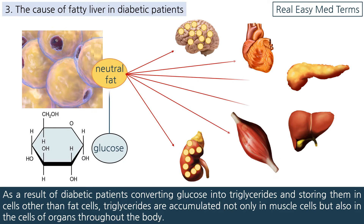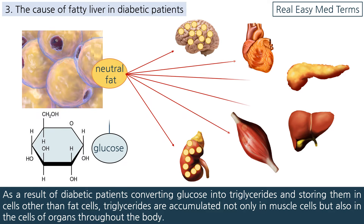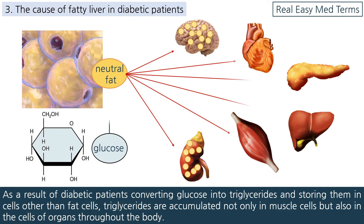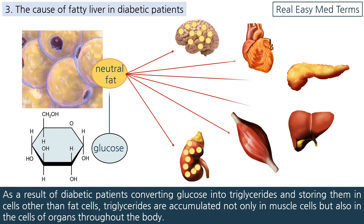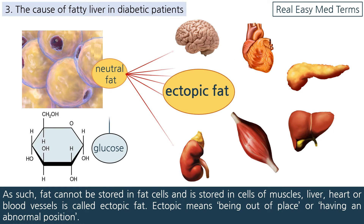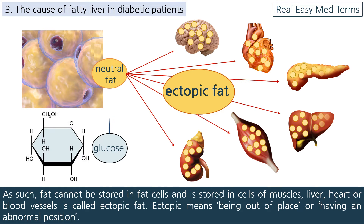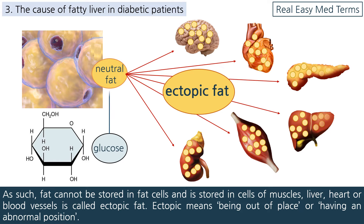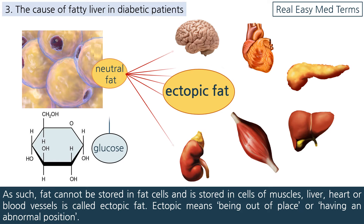As a result of diabetic patients converting glucose into triglycerides and storing them in cells other than fat cells, triglycerides accumulate not only in muscle cells but also in the cells of organs throughout the body. Fat that cannot be stored in fat cells and is instead stored in cells of muscles, liver, heart, or blood vessels is called ectopic fat.